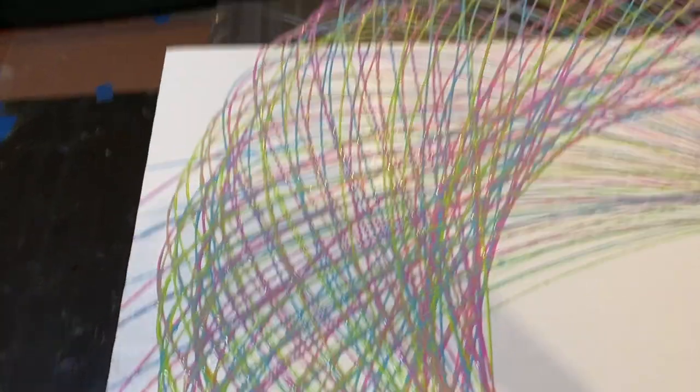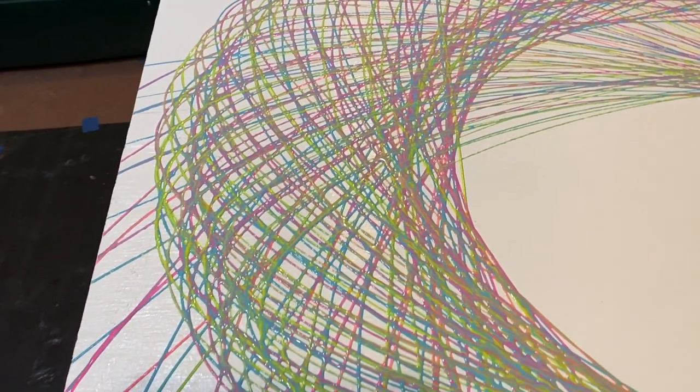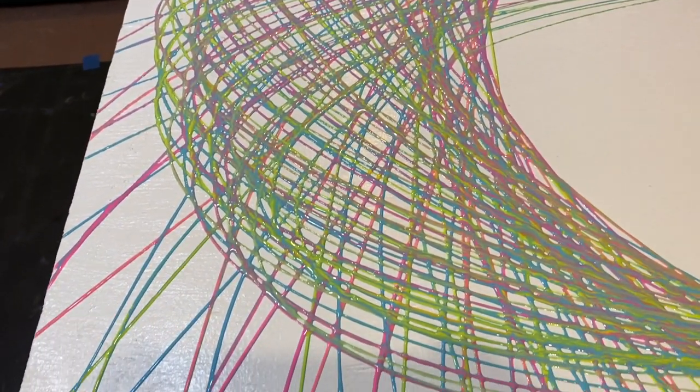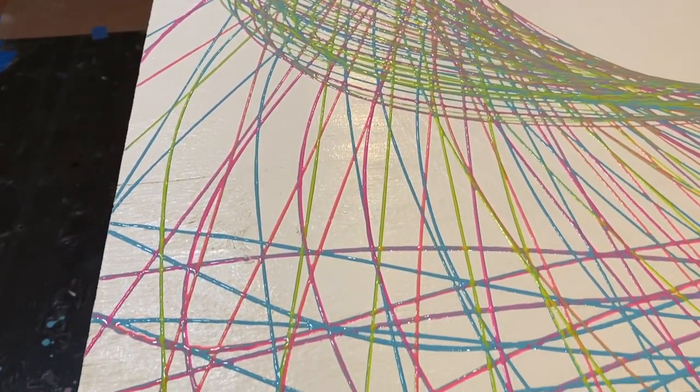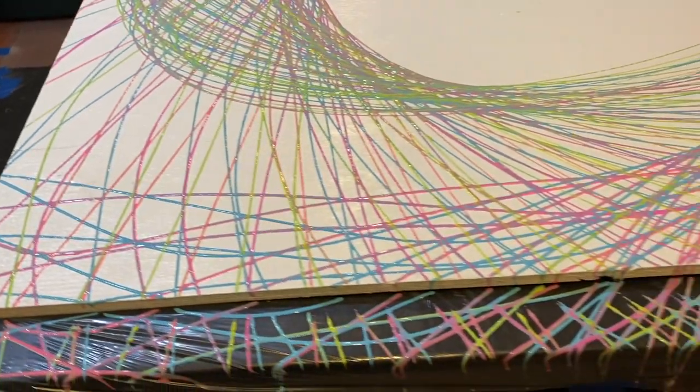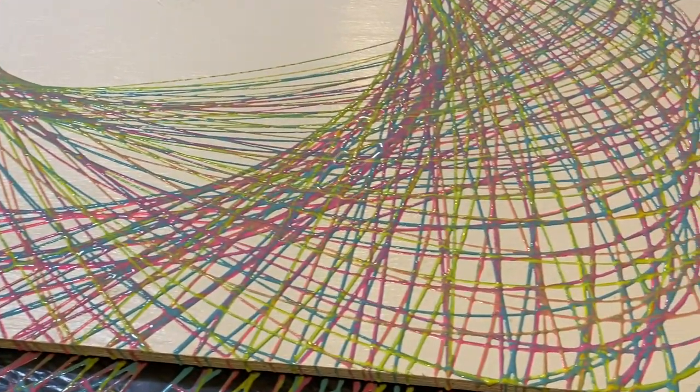So the colors that I used for this pendulum, I had a green and a pink, neon, glow in the dark by Folk Art. The yellow that I used was a flow acrylic by Artisaw. And then the blue was a pool blue by Apple Barrel.